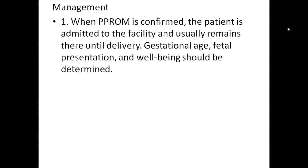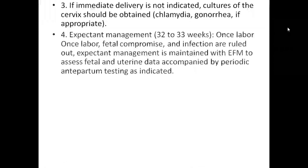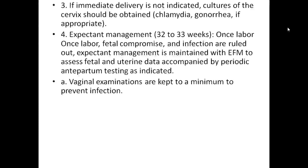Patients with evidence of intrauterine infection, placental abruption, or evidence of any infection should be delivered. If immediate delivery is not indicated, cultures of the cervix should be obtained. Once in labor, if fetal compromise and infection are ruled out, expectant management is maintained with external fetal monitoring to assess fetal and uterine data, accompanied by periodic antepartum testing. Vaginal examination and GBS prophylaxis — that is group B hemolytic streptococcus prophylaxis — is recommended. Corticosteroids and antibiotics are also used.